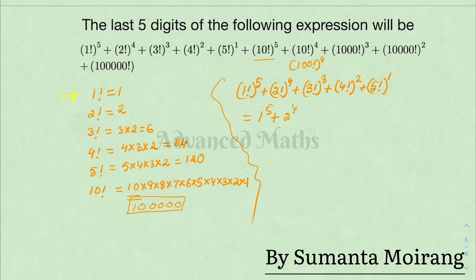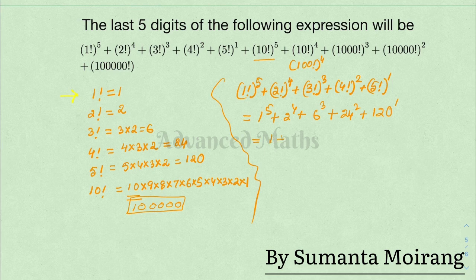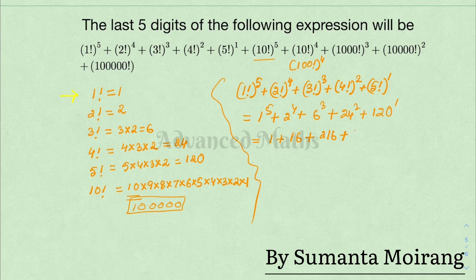So we compute: 1 factorial (which is 1) to the power 5, plus 2 factorial (which is 2) to the power 4 equals 16, plus 3 factorial (which is 6) cubed equals 216, plus 4 factorial (which is 24) squared equals 576, plus 5 factorial (which is 120) to the power 1 equals 120.